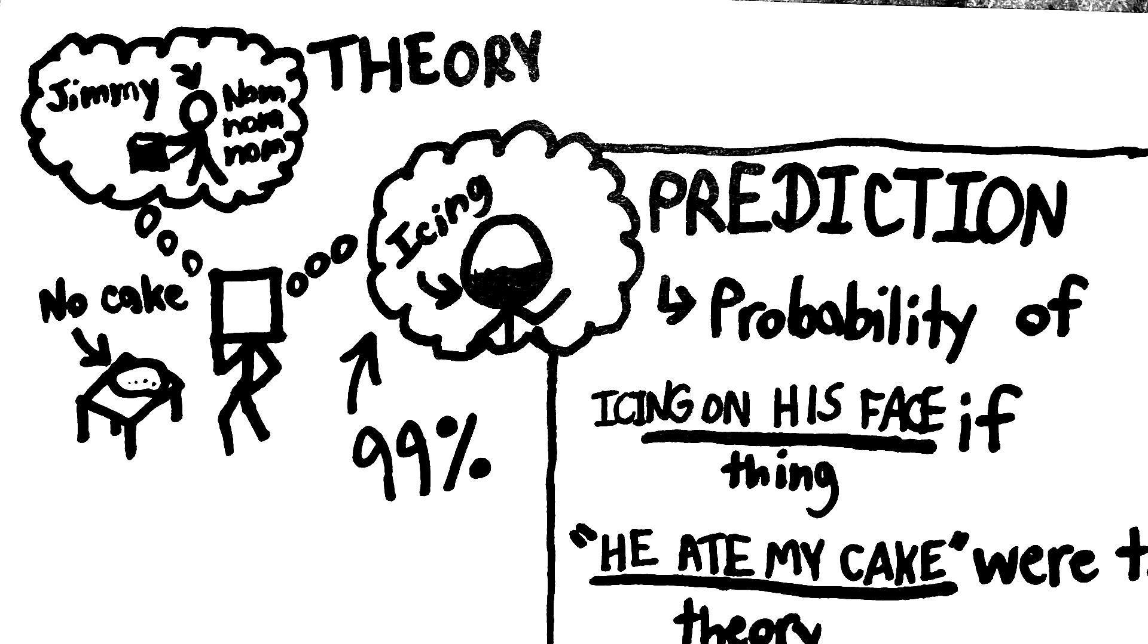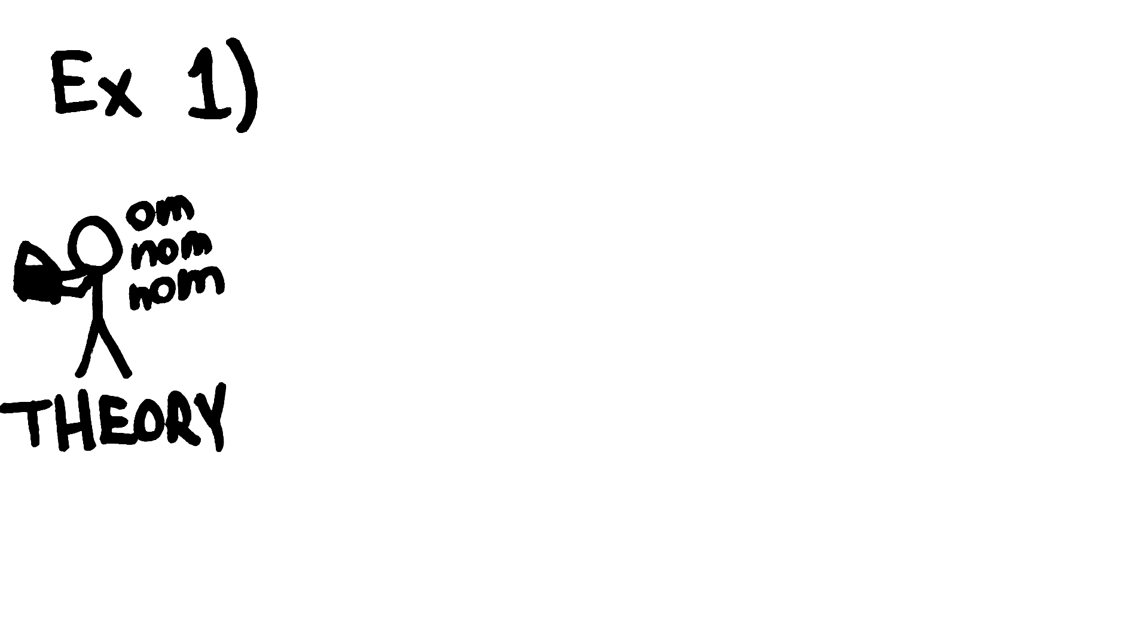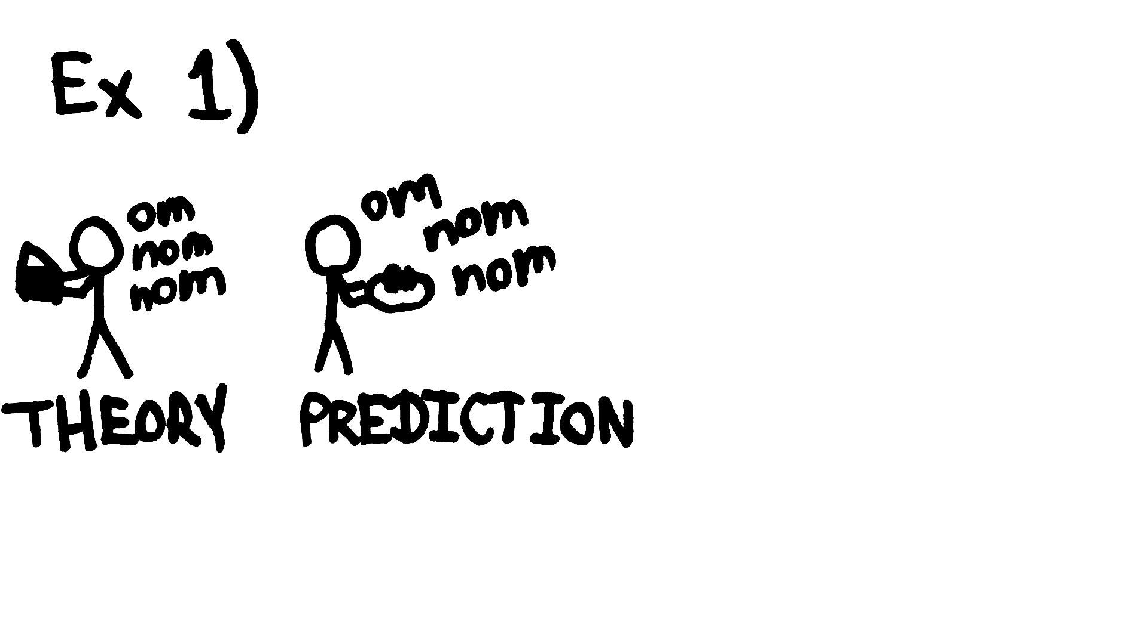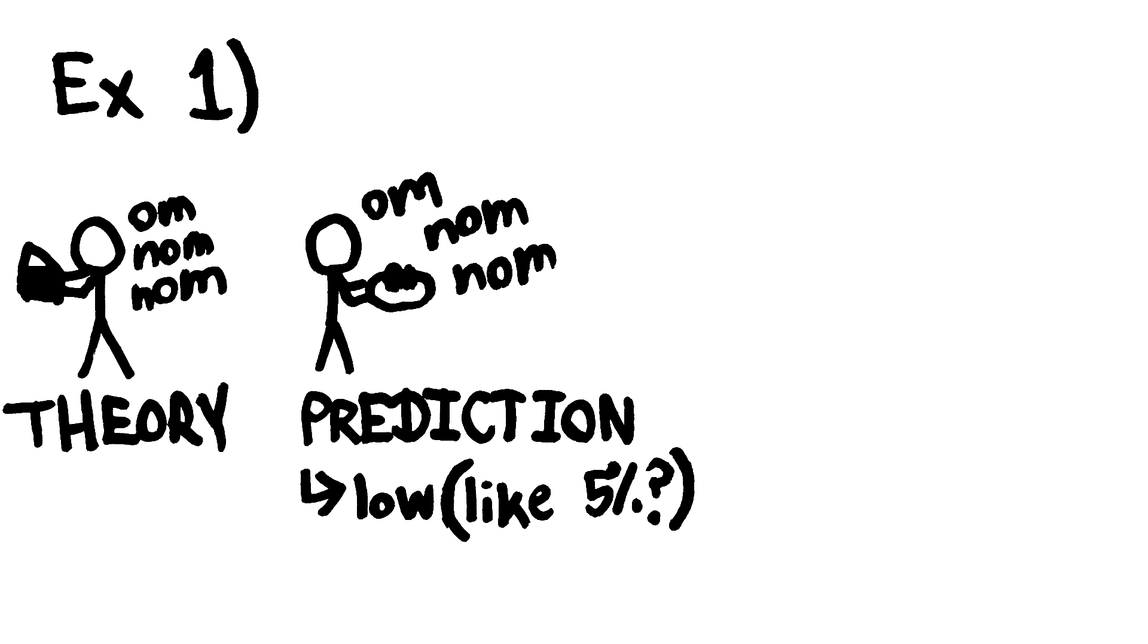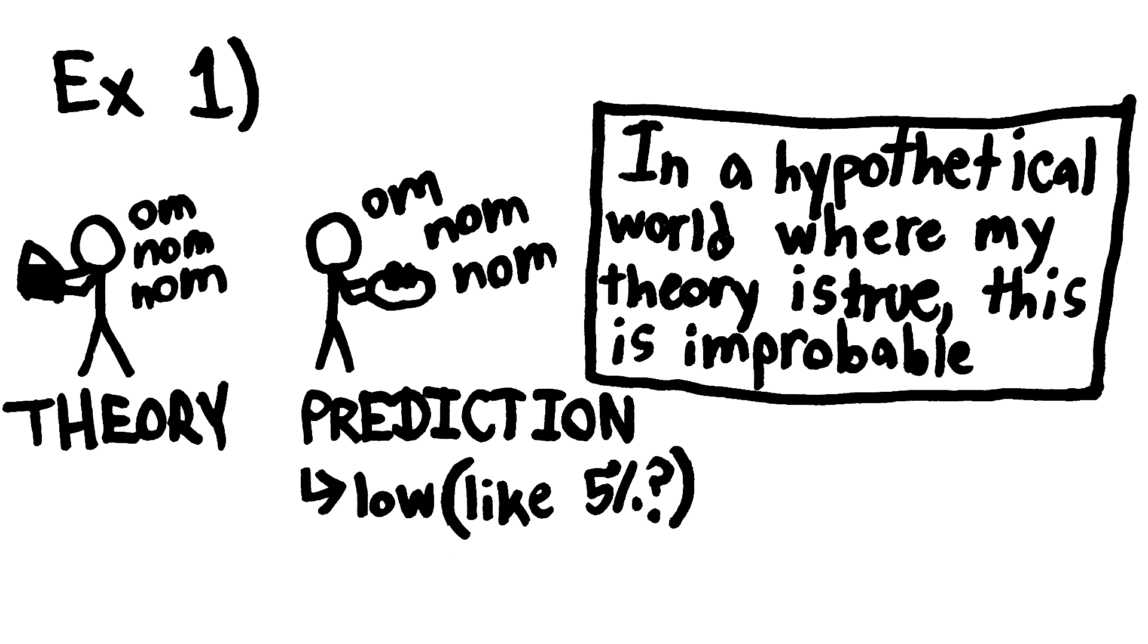To further clarify this idea, let's look at some more examples. How well does my theory that Jimmy ate the cake predict that Jimmy would eat all his dinner? Well, if he ate the cake, he wouldn't be very hungry, so the probability that he would eat his dinner is low. Maybe it'd be like 5% or 1% or something.